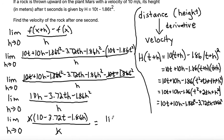What I'm left with here is the limit as h approaches 0 of 10 - 3.72t - 1.86h. Now I can do my substitution for my h going to 0. That makes this term go to 0, and it leaves me with 10 - 3.72t. That is my derivative function. Since my derivative of my distance is my velocity, this is my velocity function.